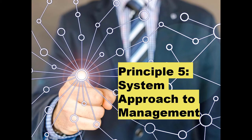Principle five leads on from the previous principle. It's about a system approach to management. A business should focus its efforts on the key processes as well as aligning complementary processes to get better efficiencies. This means that most of the processes are managed together as a system, which should lead to greater efficiencies.